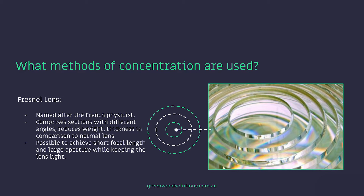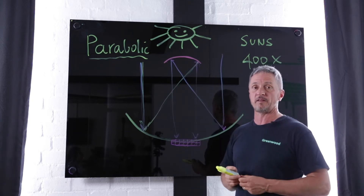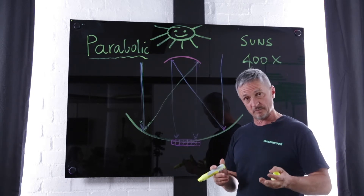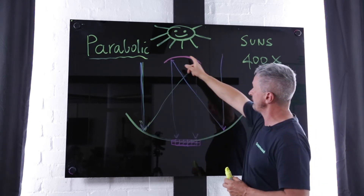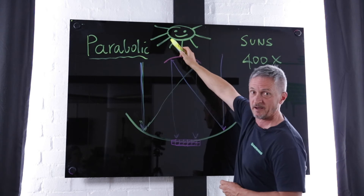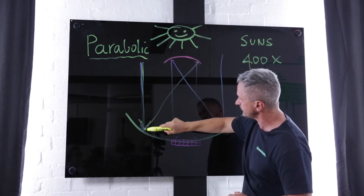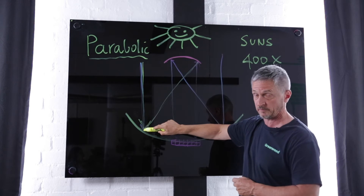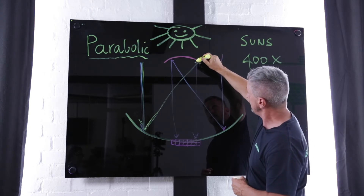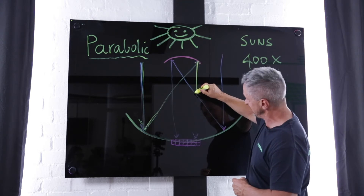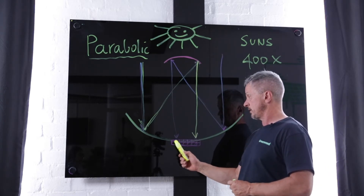Here in front of the board, I've drawn the most common of the concentration methods when talking about concentrated PV, and that's the parabolic mirror — effectively a highly polished surface. We have a primary and then we have a secondary. The sun is shining down and the rays hit this parabolic mirror, then reflect off the highly polished surface to a secondary parabolic mirror that's smaller, and then it powers down hitting this very highly efficient solar cell.